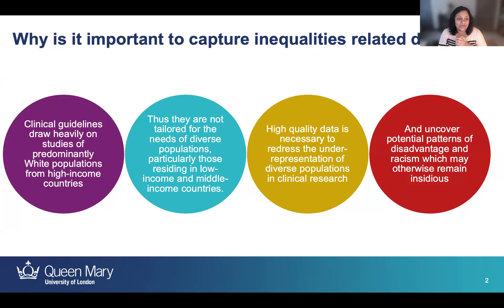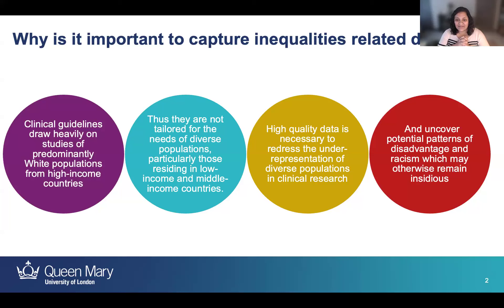A lot of the clinical guidelines that we use both in the UK and internationally really draw heavily on clinical studies and trials from predominantly white populations and predominantly from high-income countries. This means that the clinical guidelines we use are not tailored to the needs of diverse populations, particularly those residing in low and middle-income countries. We are increasingly having access to high-quality data from across the globe, which are essential to redress the underrepresentation of diverse populations in clinical research and to uncover potential patterns of disadvantage and racism, which may otherwise remain insidious.